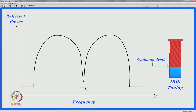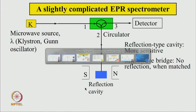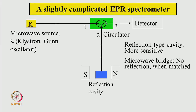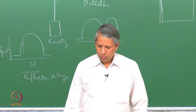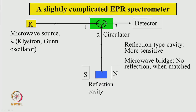So this is the spectrometer now where let us say we have achieved the critically coupled or very nearly critically coupled condition. So very little microwave power is getting reflected and appearing in the detector. Now, this is fine, but not good enough because the detector diode has very little power that falls on it.